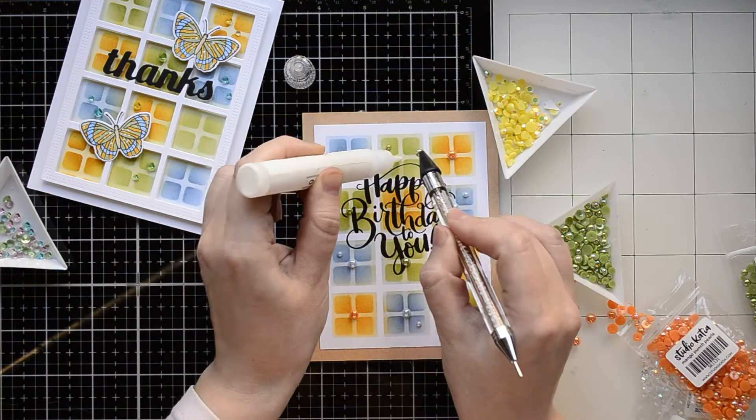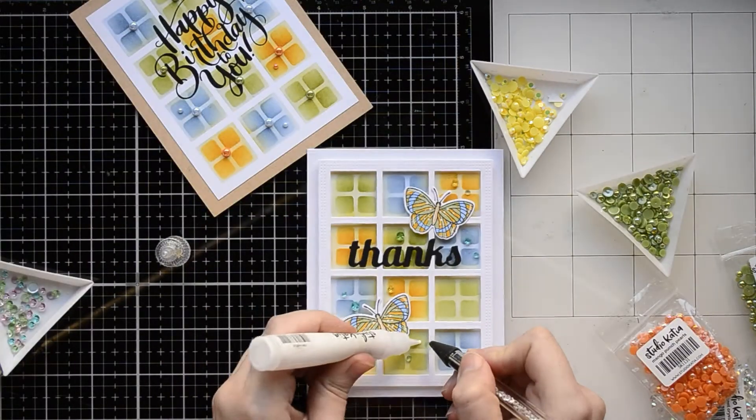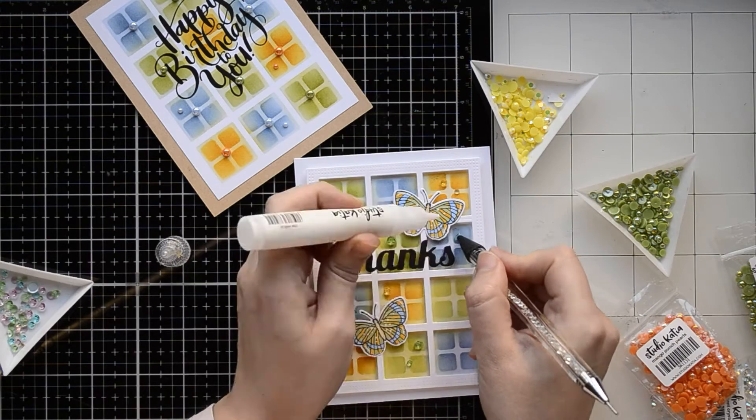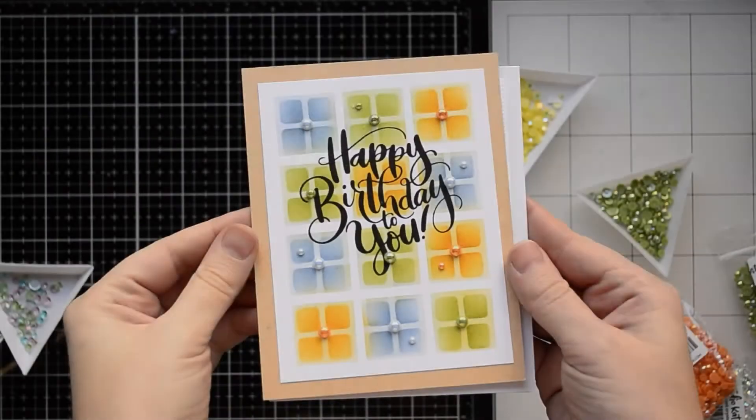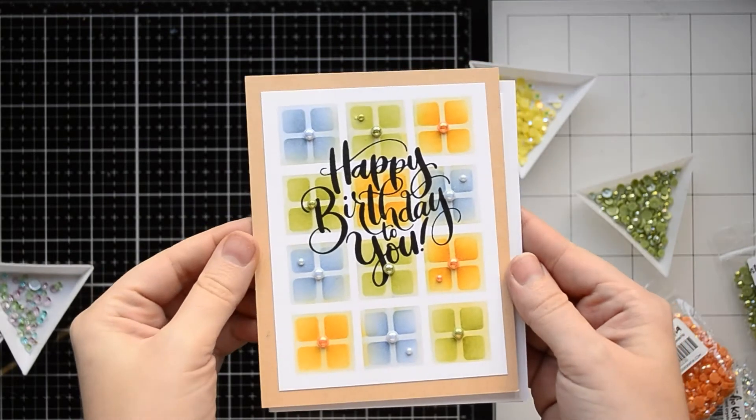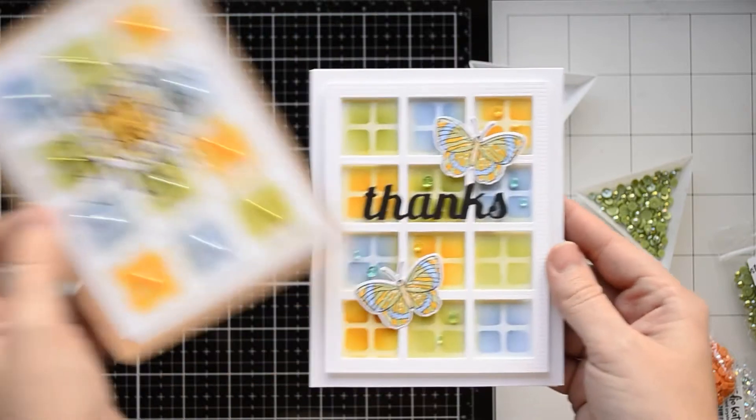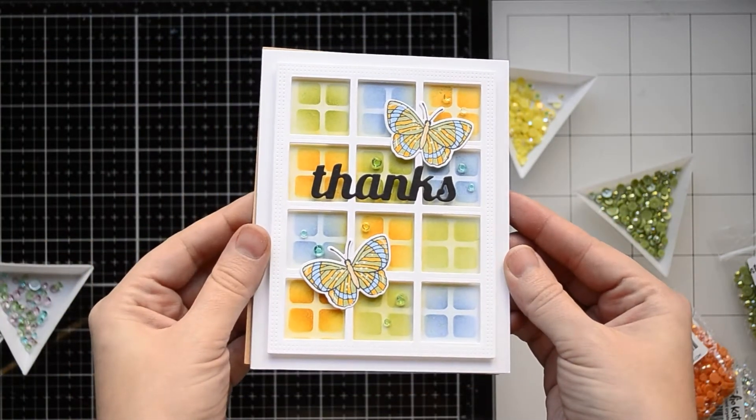To embellish my first card I'm going to use a lot of pearls and I pick some matching colors like yellow, green and light blue. For my second card I use the same colors of embellishments but this time I used transparent crystals. I attach all of my embellishments using liquid glue from Studio Katia and my amazing tool embellishment wand.